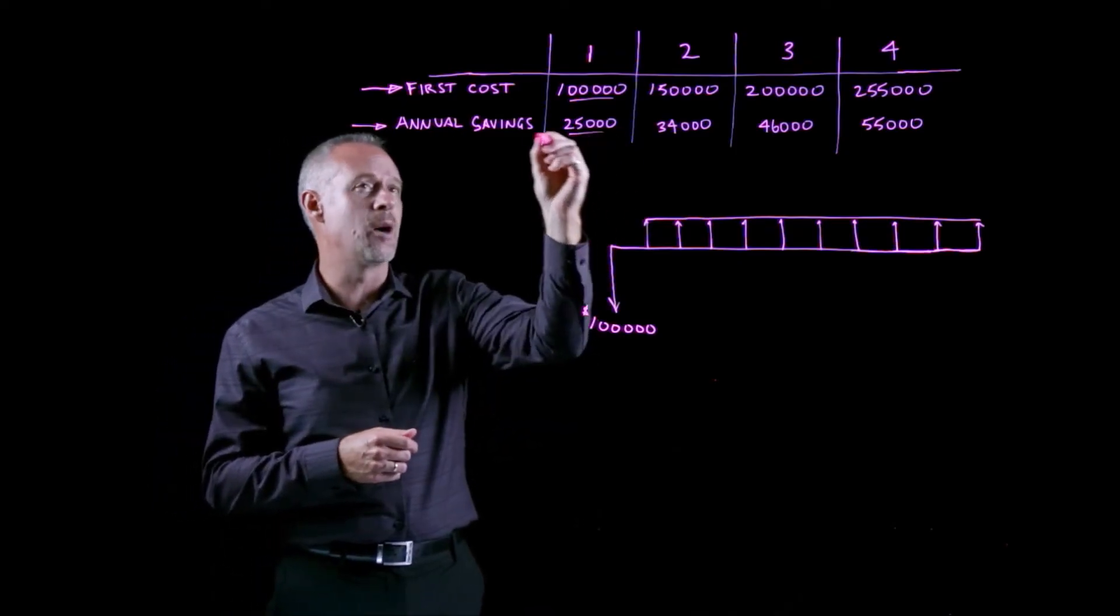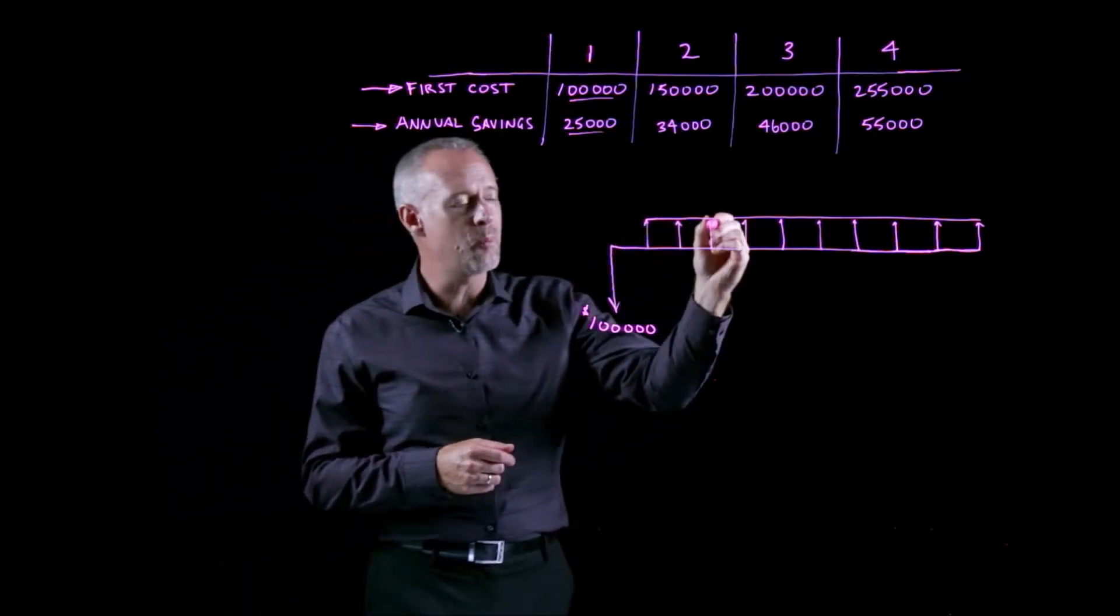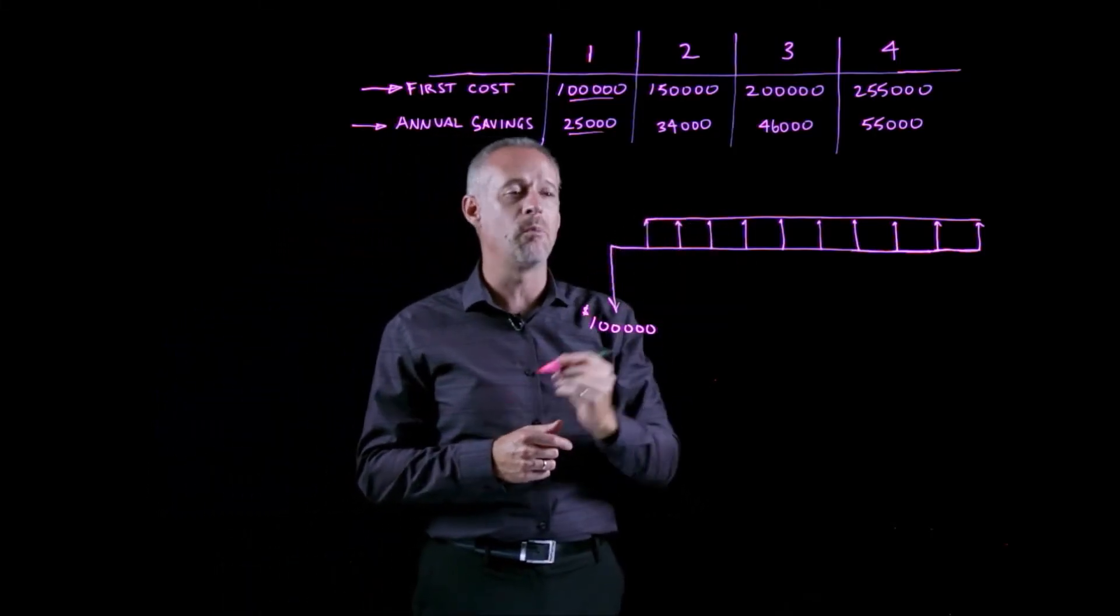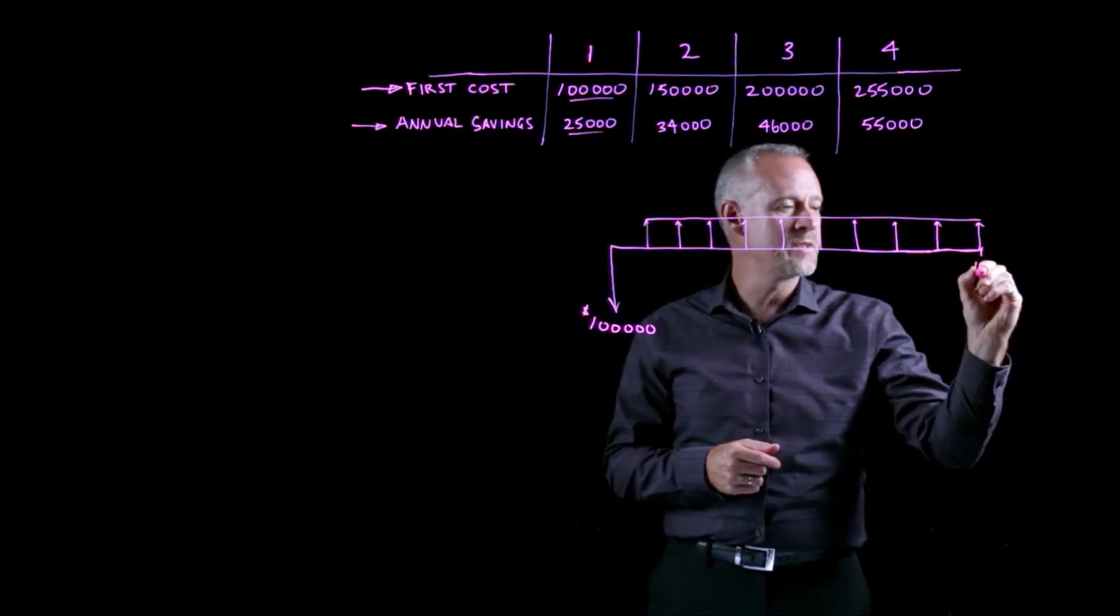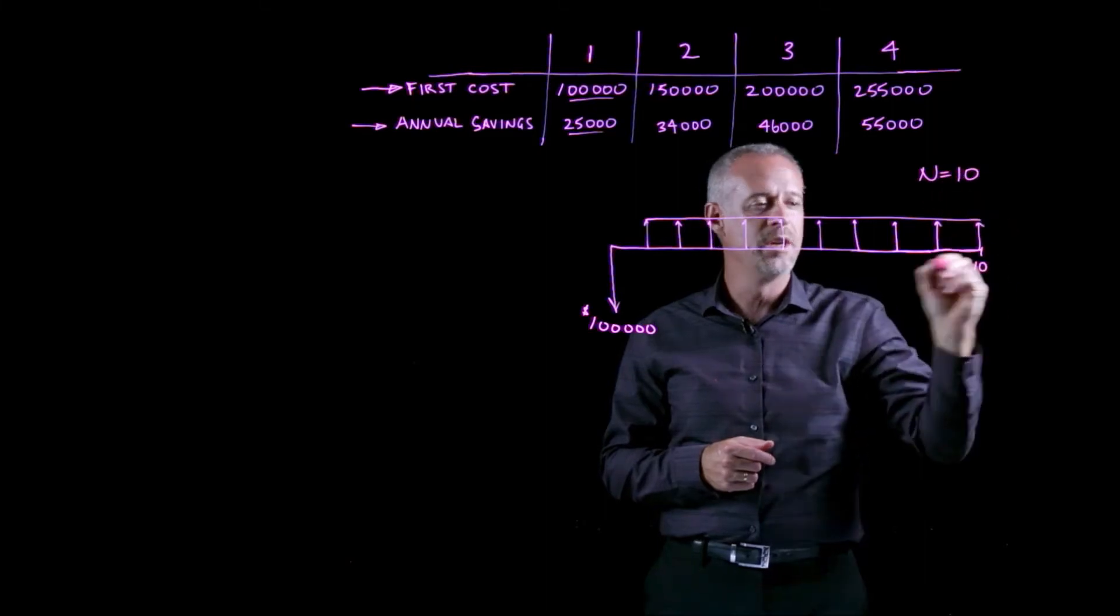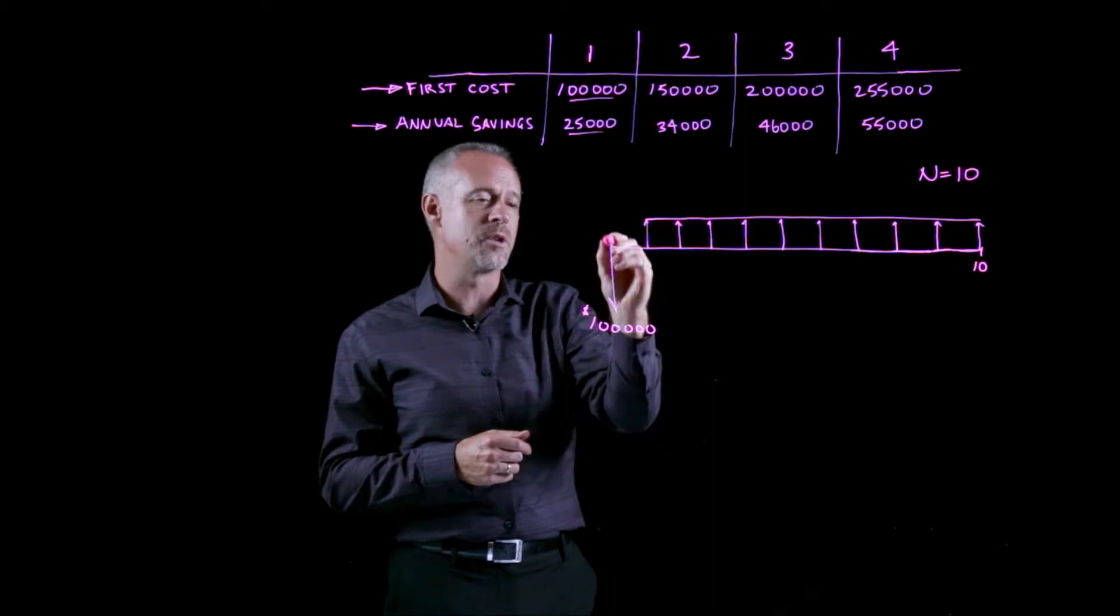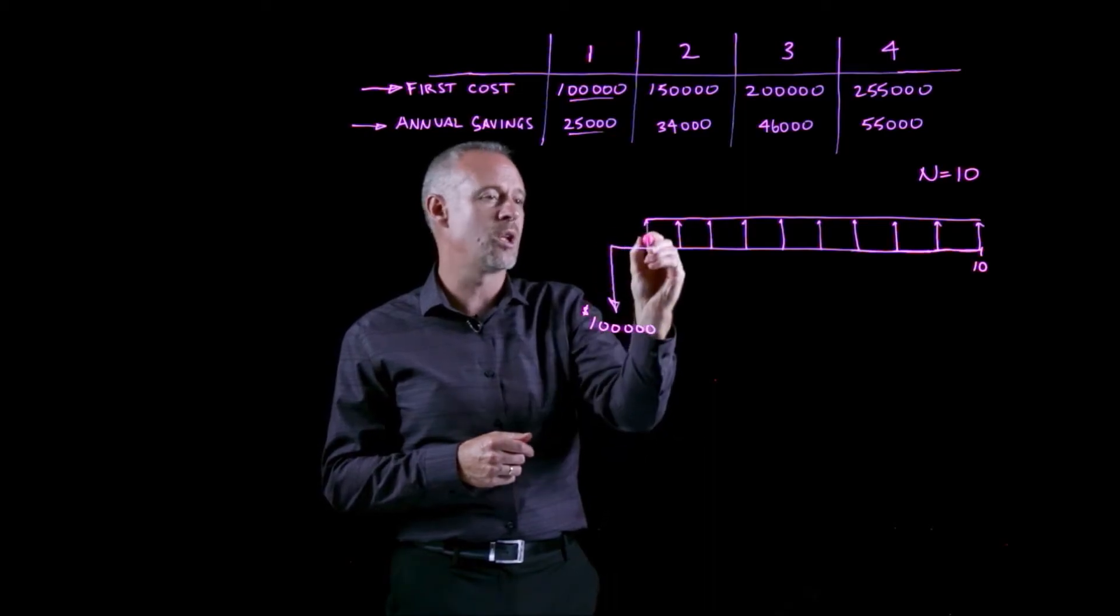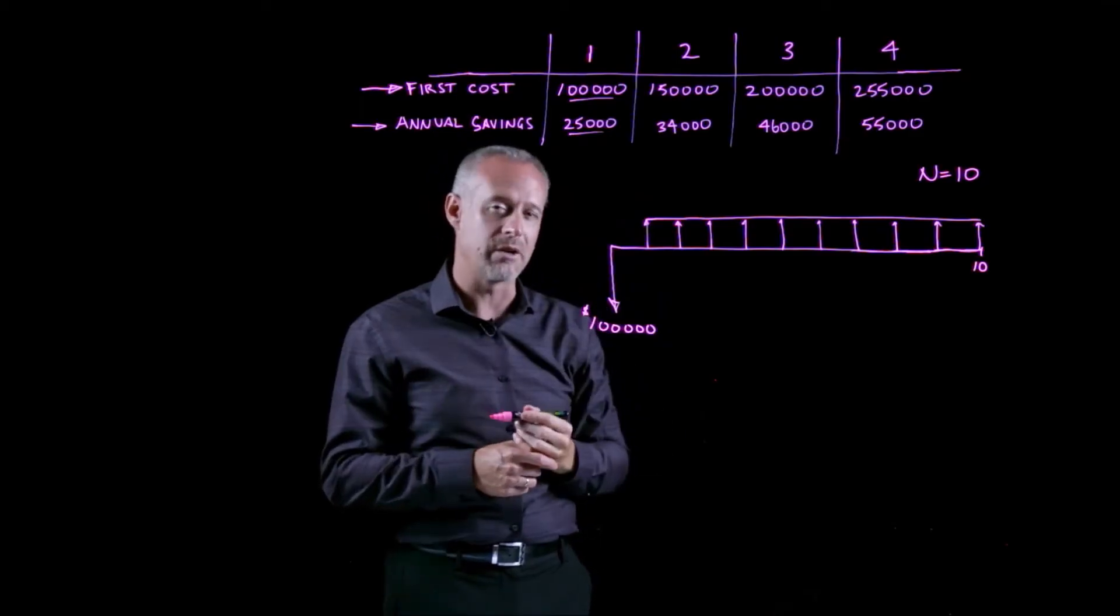We then have a benefit, so an annual savings is a benefit to us, so then we have up arrows. And for this particular problem, we learn that the timeframe is 10 years, so in this case, our n is going to be equal to 10. And just to illustrate what this means for 10 years is that we have the initial investment plus 10 up arrows of $25,000.